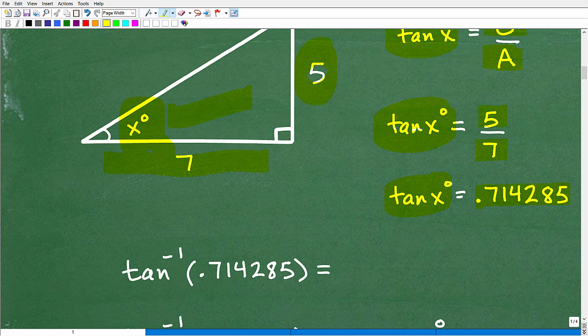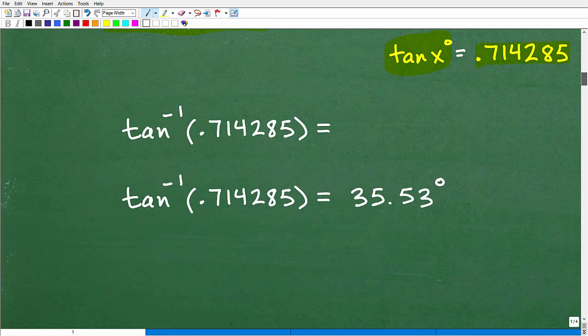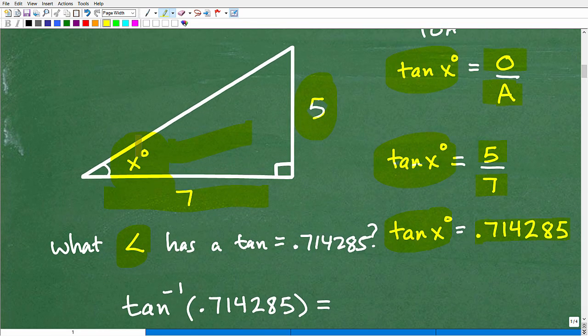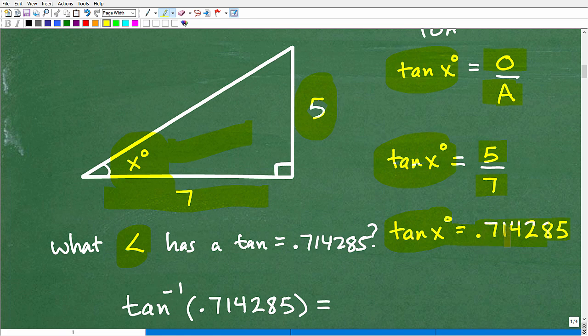Now, we have to use our calculator to ask a question, okay? Now, here's the question we're going to ask our calculator. We're going to say, all right, Mr. Calculator, tell me the angle, what angle has a tangent equal to 0.714285, okay? Because if I can find that angle, what angle has a tangent that's equal to 0.714285? Because this angle here, I'm like, all right, Mr. Triangle, I know you. I don't know your actual angle measure yet, but I do know that your tangent is 0.714285. So I'm going to figure you out. What I'm trying to answer, the question is, what angle has a tangent equal to 0.714285?